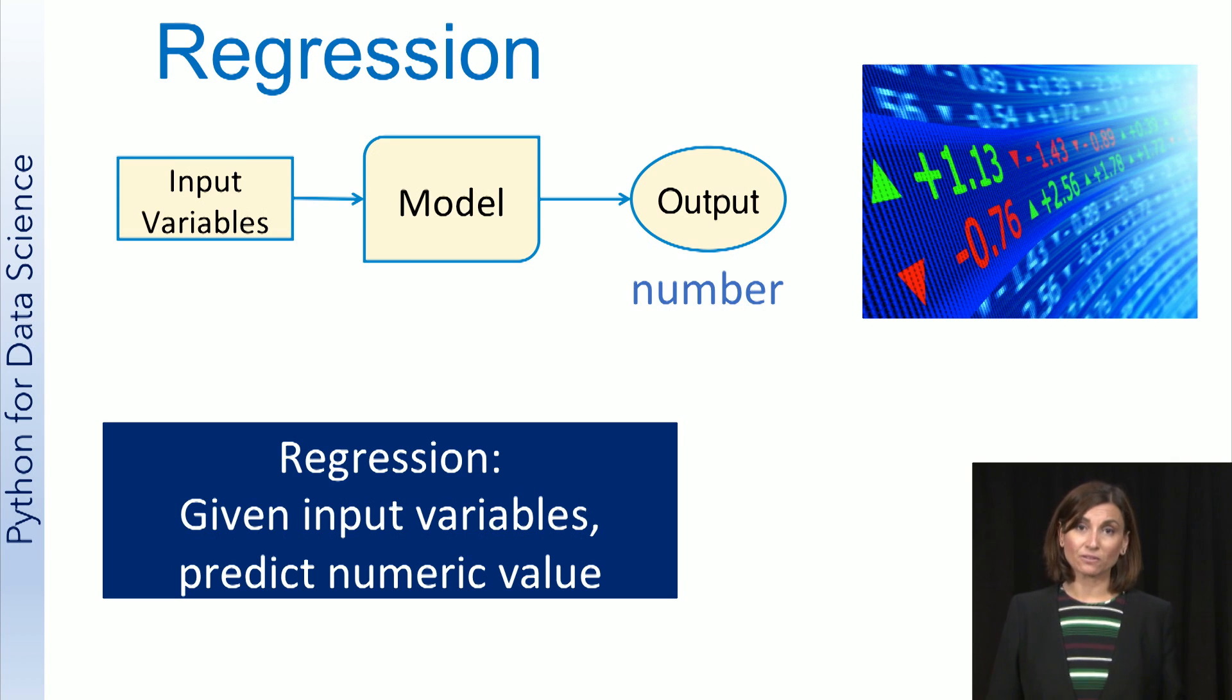An example of regression is to predict the price of a stock. The stock price is numeric and not a category, so this is a regression task instead of a classification task. Note that if you were to predict not the actual price of the stock, but whether the stock price will go up or go down, then that would be a classification task. That is the main difference between classification and regression. In classification, you are predicting a category, and in regression, you are predicting a numeric value.